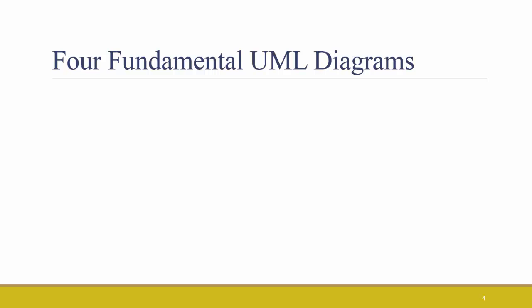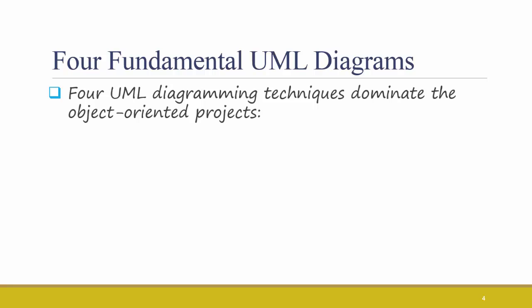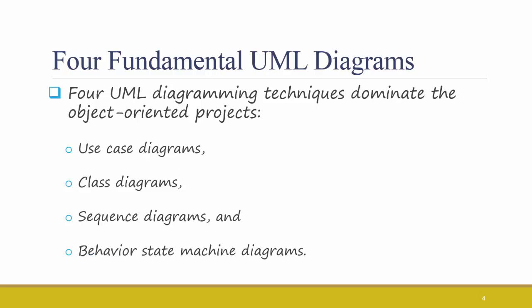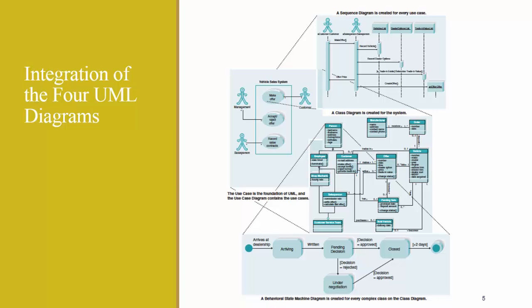There are four most fundamental UML diagrams out of the 14 listed on the previous slide. These four techniques dominate object-oriented projects: Use Case Diagrams, Class Diagrams, Sequence Diagrams, and Behavior State Machine Diagrams. This figure from the textbook shows how these four diagrams relate to each other. The Use Case Diagram is here on the left. It depicts at a very high level all the different use cases that are involved in a system. The Sequence Diagram is created for each and every use case that is in the Use Case Diagram. A Class Diagram is very similar to the ER diagrams that we are doing in this class and that you learned about in ISDS402. And a Behavioral State Machine Diagram is created for every complex class on the Class Diagram. Let's talk about each of these individually.